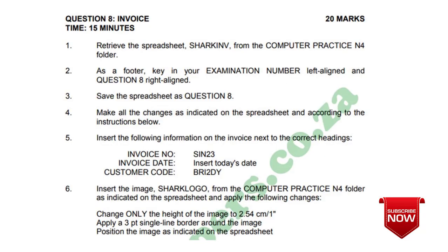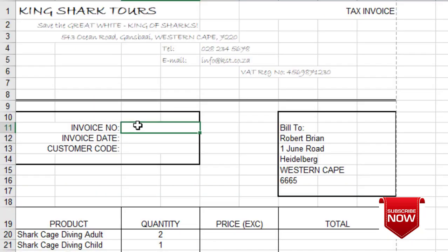The customer code is BRY2DY. On the spreadsheet, I'll enter the invoice number as SC23.